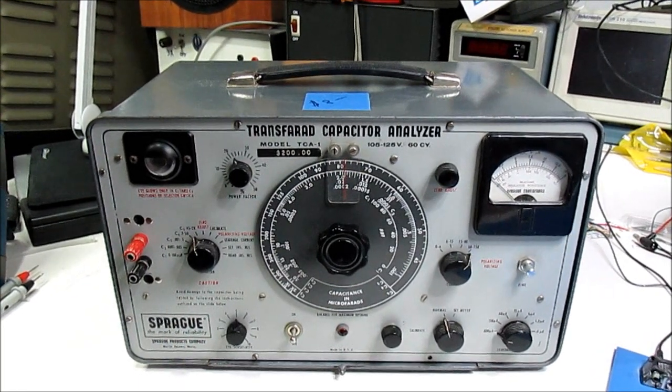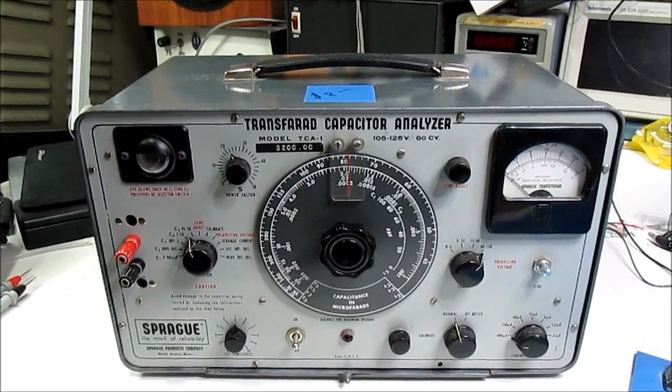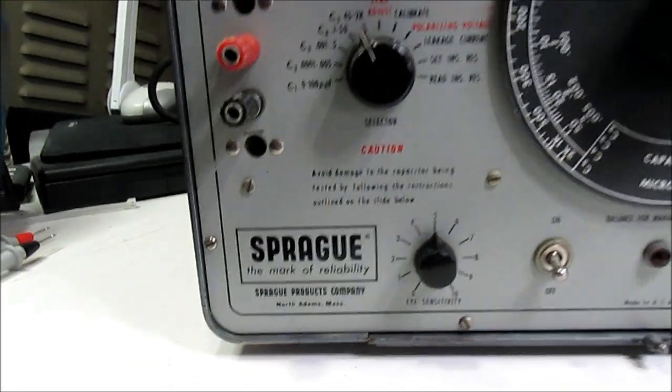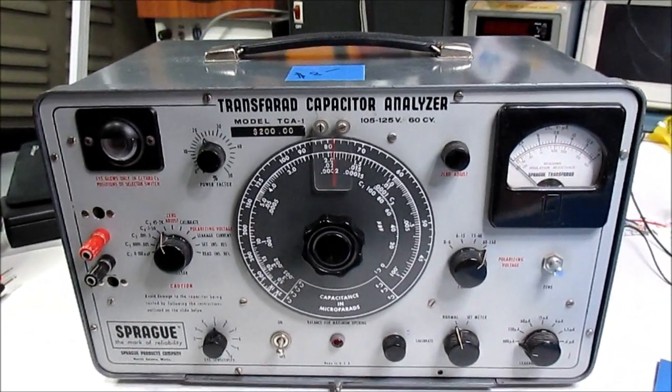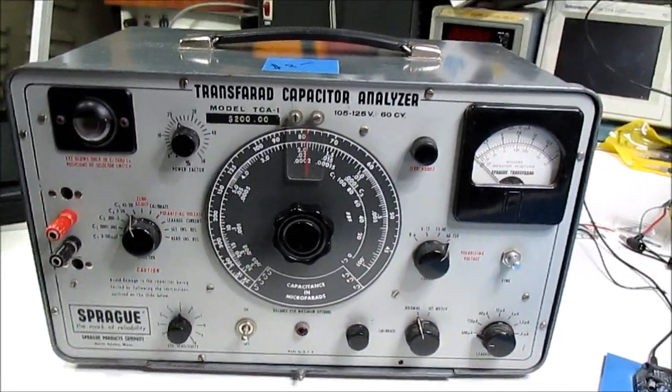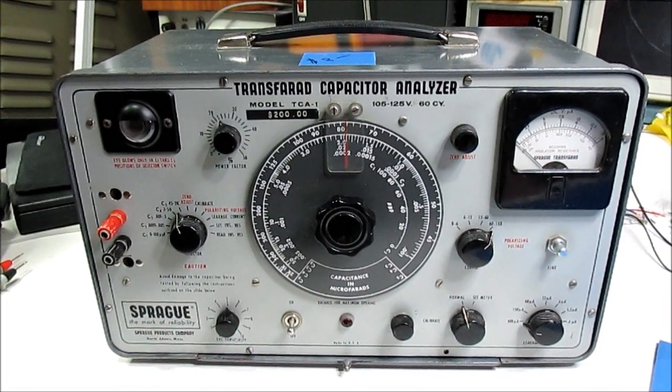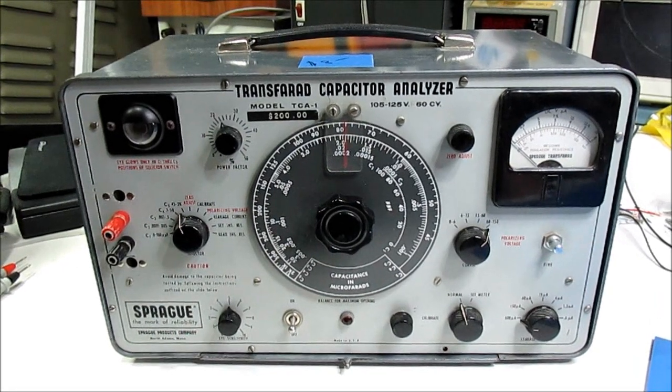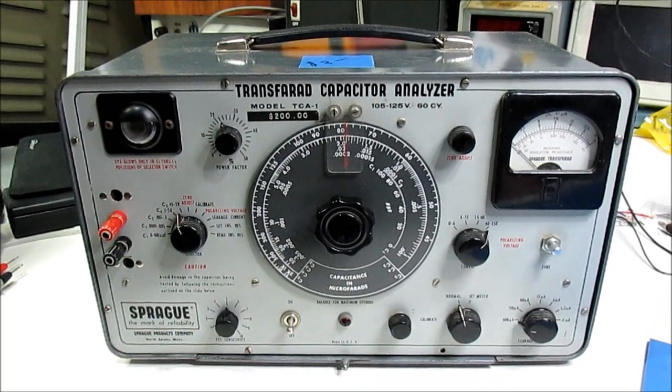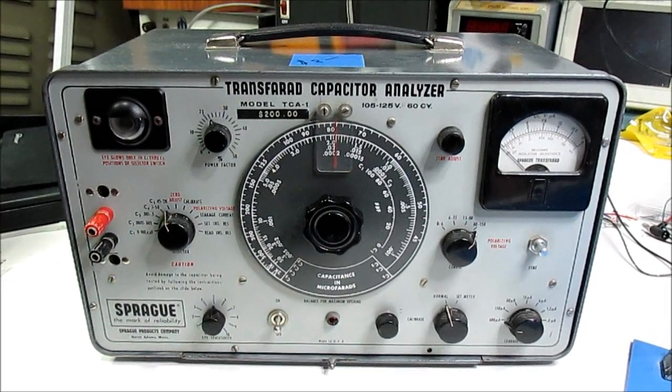Here we have another piece of very old test equipment in my collection. This is a Transfarad capacitor analyzer that was made by Sprague, the capacitor company, and I believe this dates to the early 1960s. We're going to take a look at this and see if it still works and do a little checkout on it.